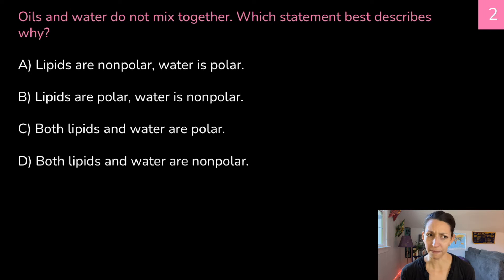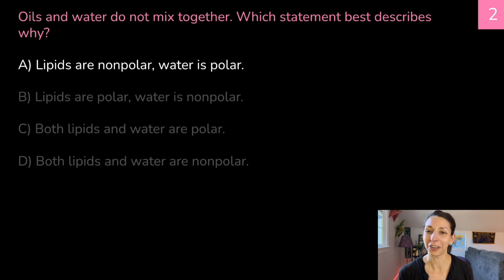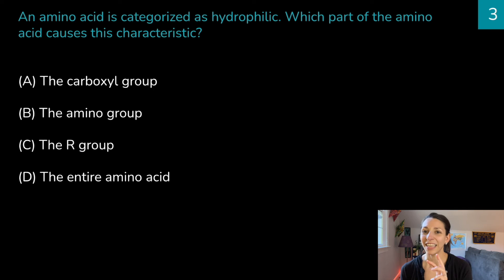Oils and water do not mix together. Which statement best describes why? A lipids are nonpolar, water is polar. B lipids are polar, water is nonpolar. C both lipids and water are polar. Or D both lipids and water are nonpolar. The correct answer is lipids are nonpolar and water is polar. If you think about that cell membrane, remember the lipid tails are going to arrange themselves in the center in that bilayer because they are hydrophobic. They don't want to touch water. And then the heads outside, those are polar molecules. They are hydrophilic and so they will be outward and interfacing where there's more water outside the cell and inside the cell.